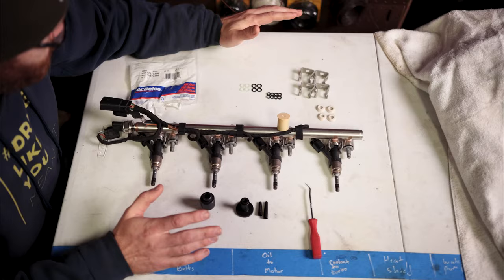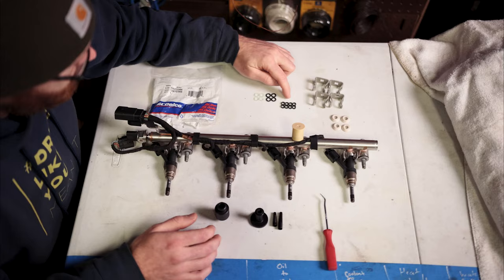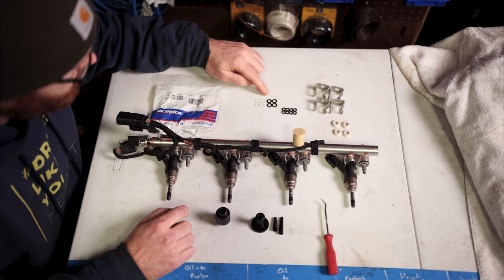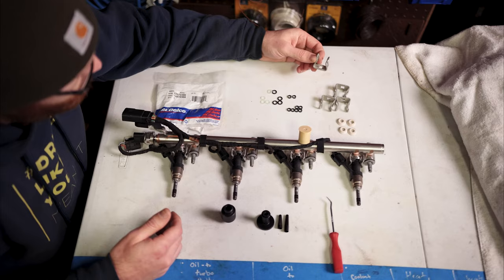If you're going to do this job, this is everything that comes in the kit. We'll have the part number for the parts in the description. The only thing we're replacing today are these eight lower seals. However, if you're actually replacing the injector, you're going to need these top two seals—two for each injector—and two of these for each injector. Since we're keeping everything on the rail, we're just going to need these. They also include new brackets.